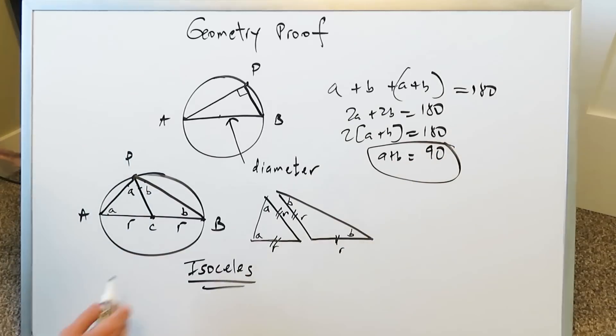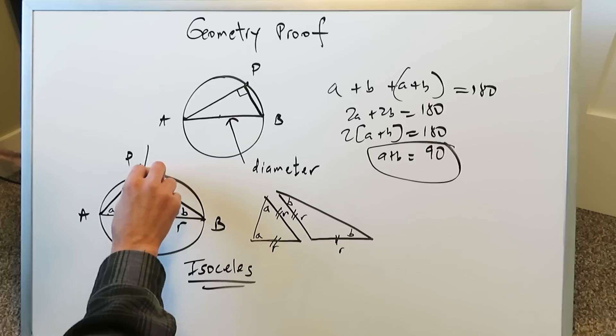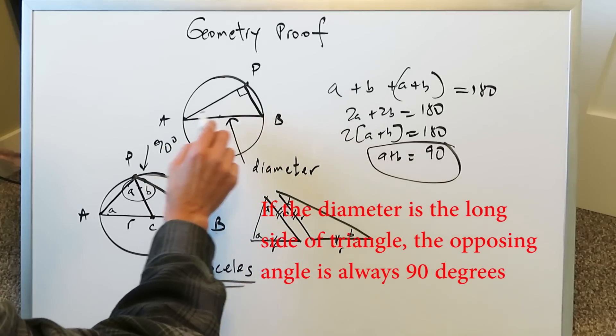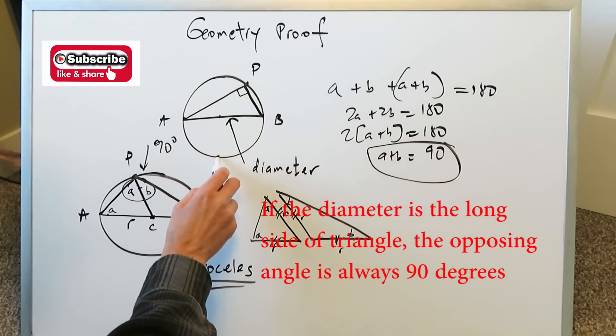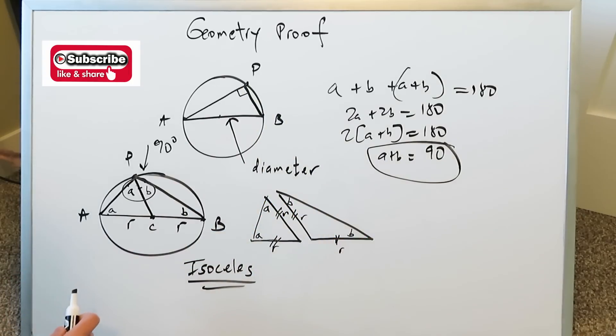So wherever I'm seeing a combination of A plus B, as I'm seeing right over here, that right there must be 90 degrees. And we've proven this to be the case. If you have a diameter—let's call that diameter AB—and you connect the diameter with a third point anywhere on that circle, you generate a triangle. That third angle that you've generated will always be 90 degrees, and we've shown it to be the case.